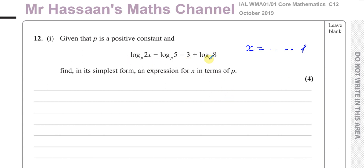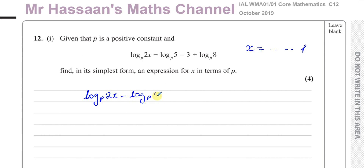We have to get rid of these logarithms. What we could do is bring all the logarithm terms to one side. So I can write: log base P of 2x minus log base P of 5 minus log base P of 8 equals 3.